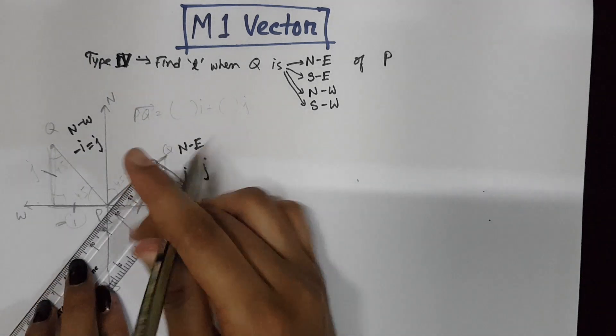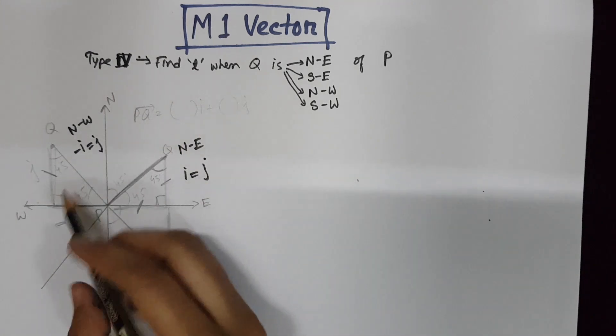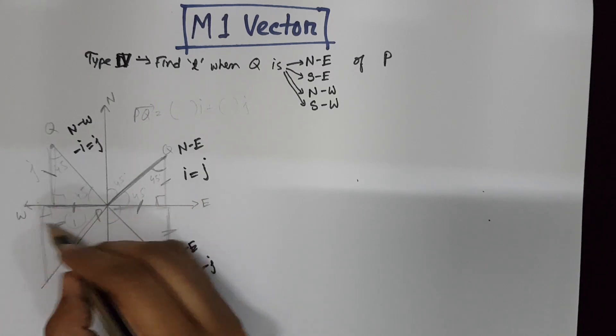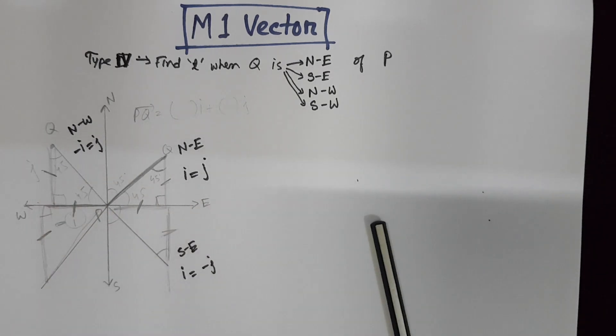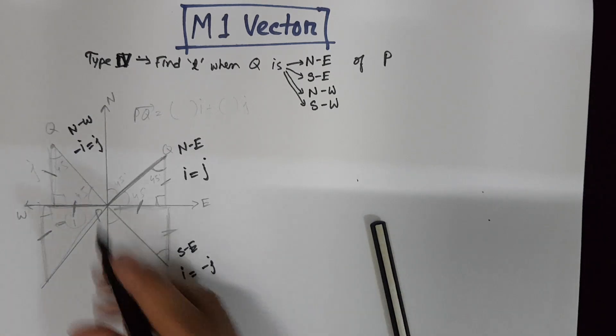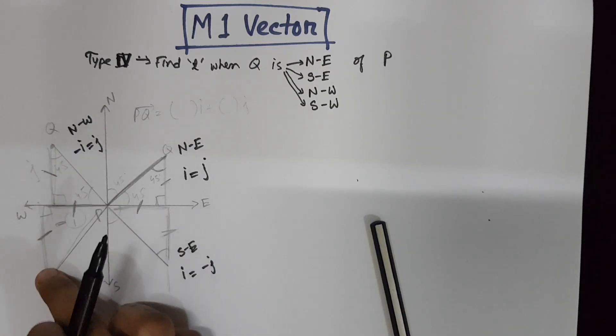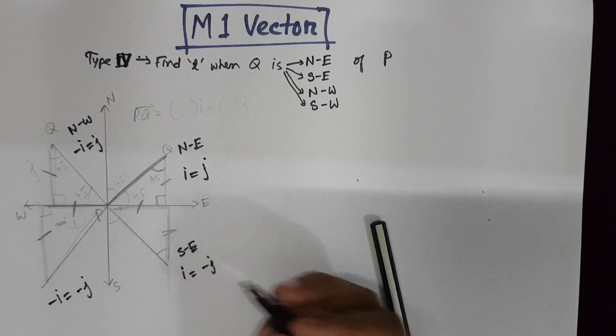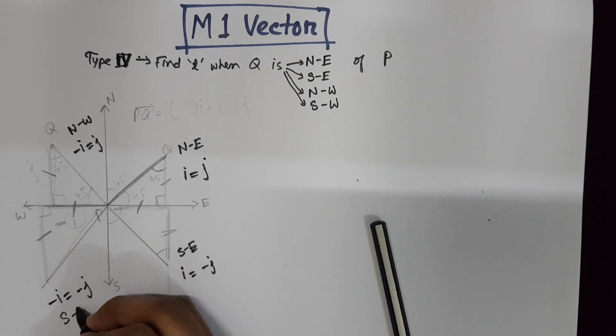Similarly, if the particle is in a south-west direction, and we form any right-angled triangle, the I and J will be equal. The magnitude of I and J will be equal. But the direction of I is negative, the direction of J is negative. So minus I equals to minus J. That's for south-west.